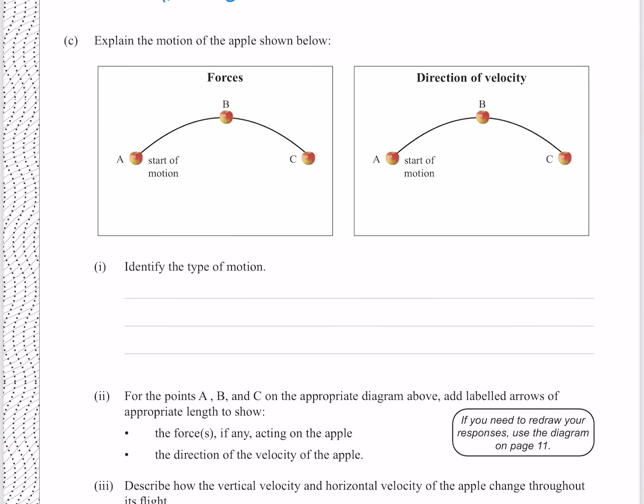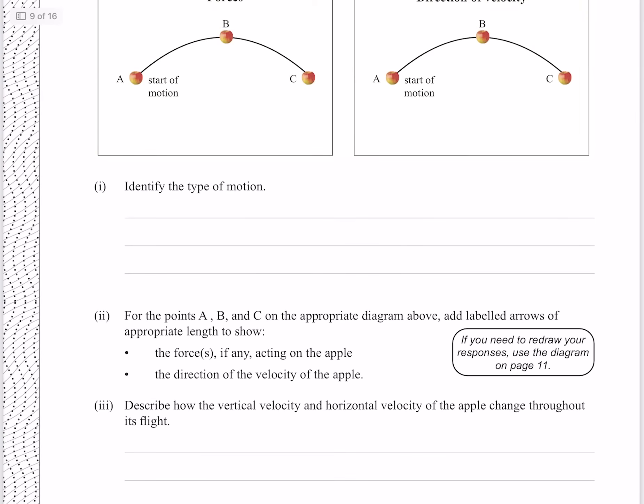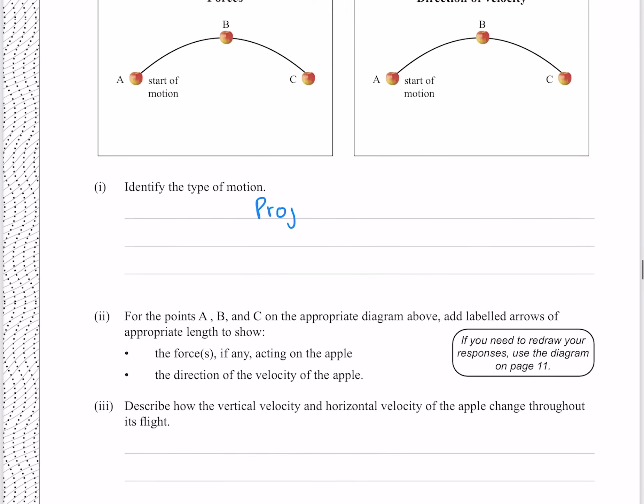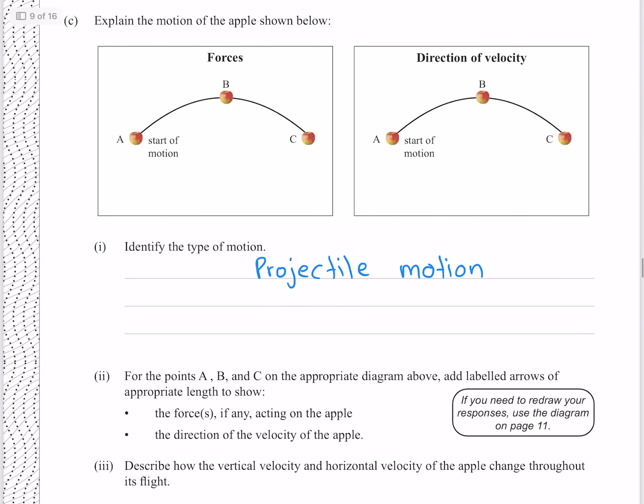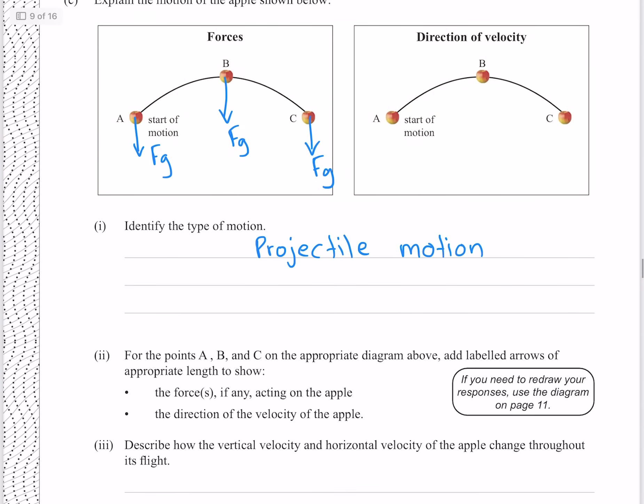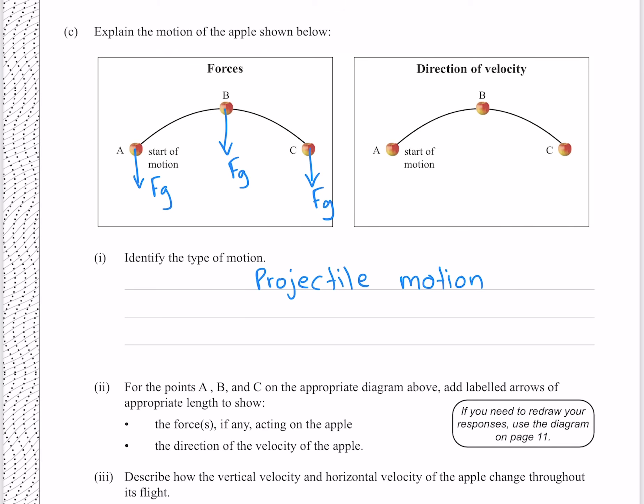Explain the motion of the apple shown below. Identify the type of motion. This type of motion, where we have both horizontal and vertical components, is projectile motion. For the points A, B and C on the appropriate diagram above, add labeled arrows of the appropriate length, to show the forces if any acting on the apple. The only force acting is our force of gravity, which is always going to point downwards, and is always going to be the same length.